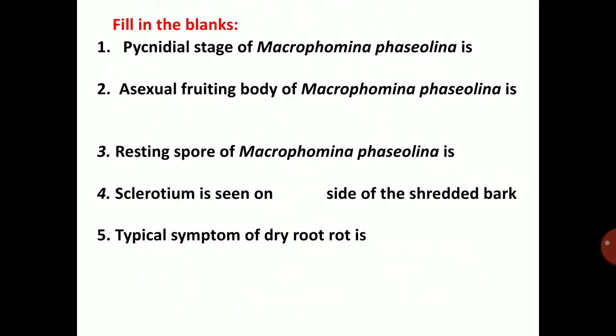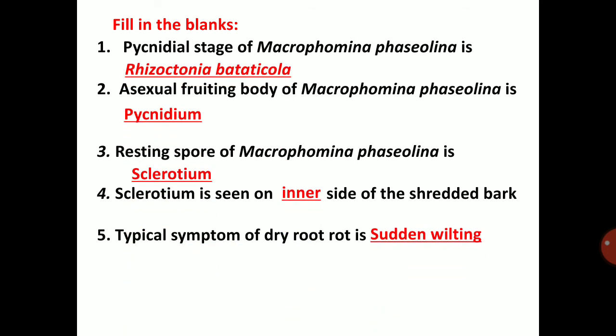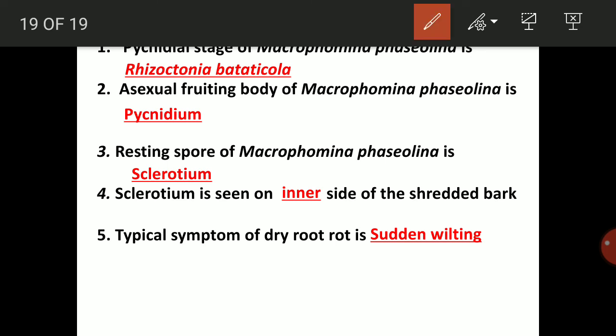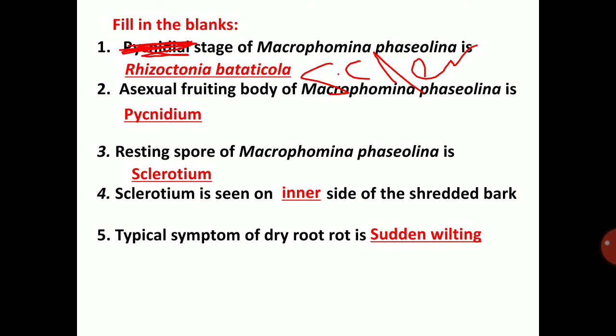Now for review questions: The pycnidial stage of Macrophomina fasciolina is the asexual stage. The asexual fruiting body of Macrophomina fasciolina is the pycnidium. The sclerotial stage of Macrophomina fasciolina is Rhizoctonia bataticola. The resting structure of Macrophomina fasciolina is the sclerotium. Sclerotium is seen on the inner side of the shredded bark. The typical symptom of dry root rot is sudden wilting.